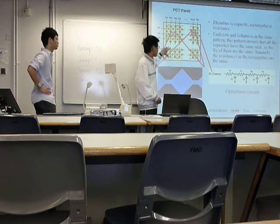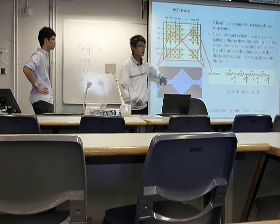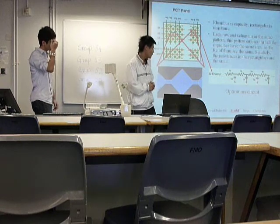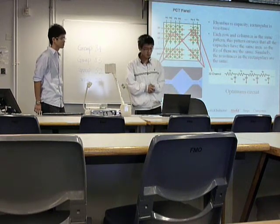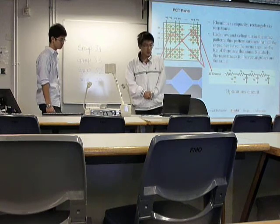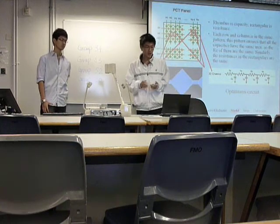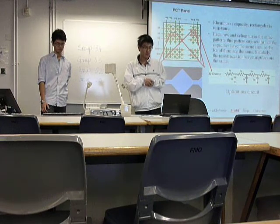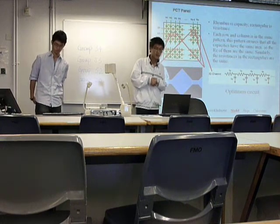The diamond shapes are capacitors and the rectangles are resistors, so we can have an equivalent circuit like this. Each row follows the same pattern, and this pattern ensures that all the capacitors have the same area, so the capacitance of them are the same.